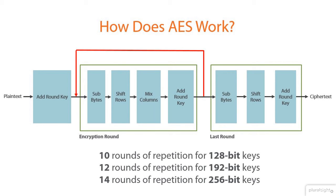The number of rounds are as follows: 10 rounds of repetition for a 128-bit key, 12 rounds of repetition for a 192-bit key, and 14 rounds of repetition for a 256-bit key. Each round consists of several processing steps, each containing four similar but different stages, including one that depends on the encryption key itself. A set of reverse rounds are applied to transform the ciphertext back into the original plaintext using the same encryption key.